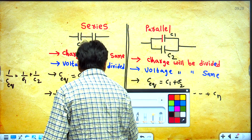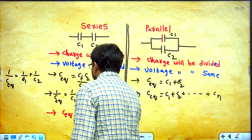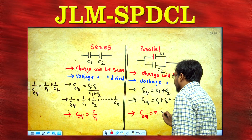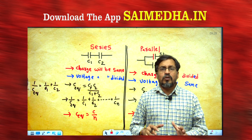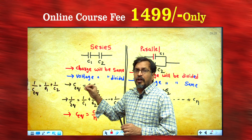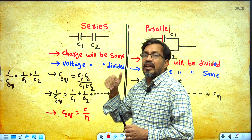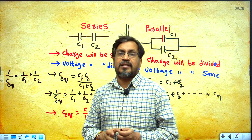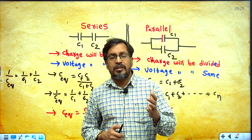If N capacitors having equal capacitance C are connected in series, C equivalent equal to C by N. If N capacitors having equal capacitance C are connected in parallel, C equivalent equal to NC. This is compulsory — one question, one mark. We will discuss this topic further and prepare short notes for these formulas for solving problems. In the next video we will discuss this topic. Thank you students.